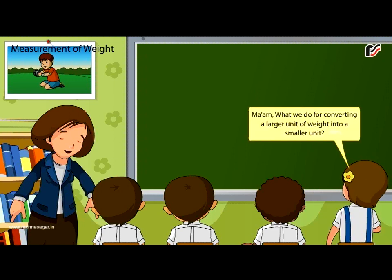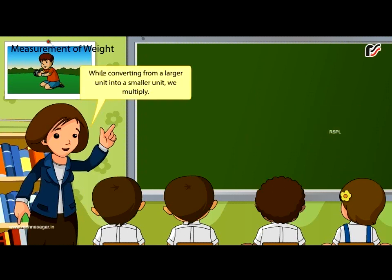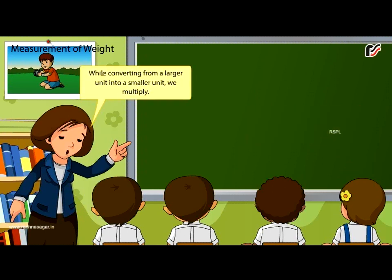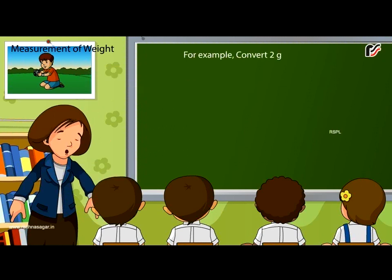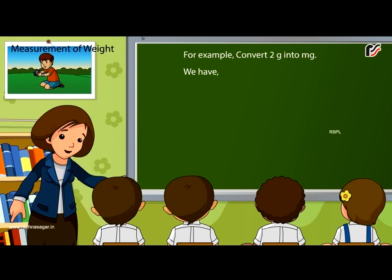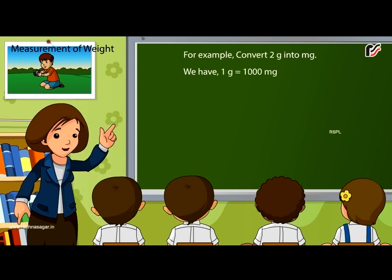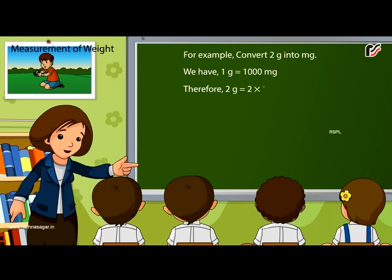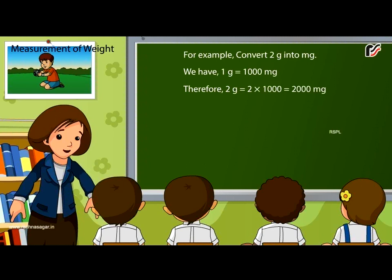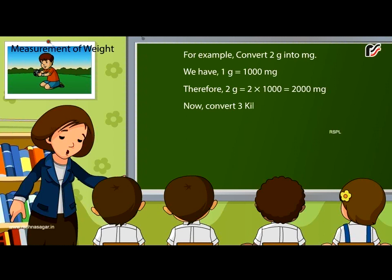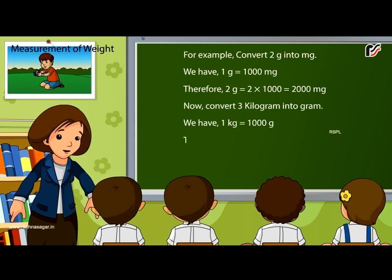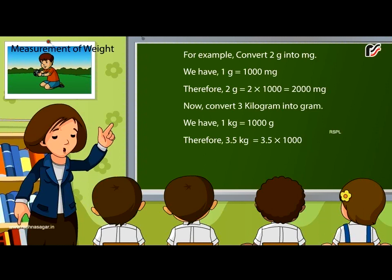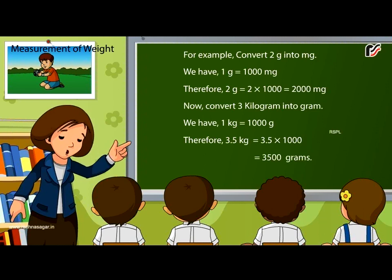While converting a larger unit of weight into a smaller unit, we multiply. For example, convert two grams into milligrams. We have one gram is equal to one thousand milligrams. Therefore, two grams is equal to two multiplied by one thousand, which equals two thousand milligrams. Now convert three kilograms into grams. We have one kilogram is equal to one thousand grams. Therefore, three point five kilograms is equal to three point five multiplied by one thousand, which equals three thousand five hundred grams.